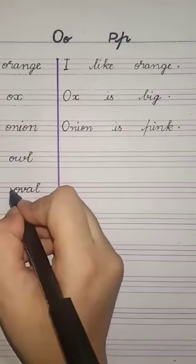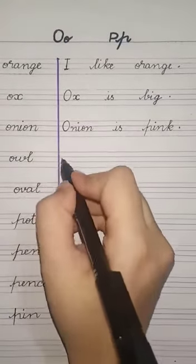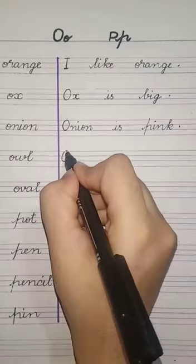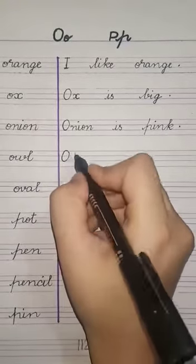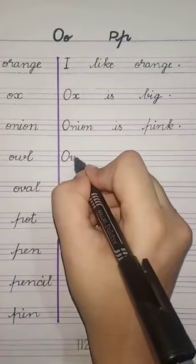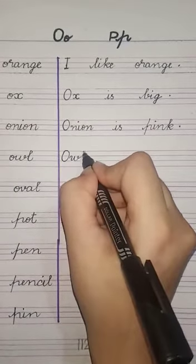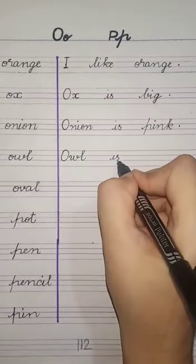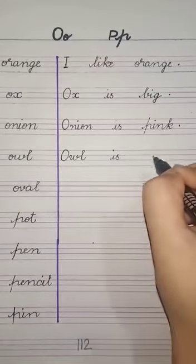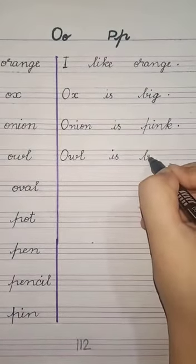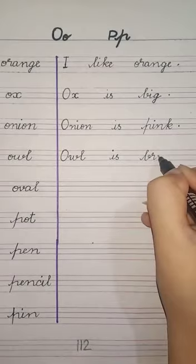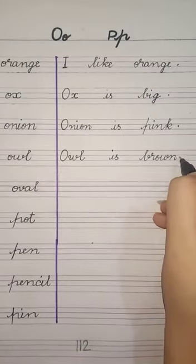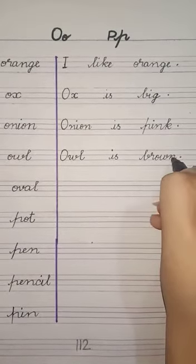Next is Owl. Owl kehet hai ullu ko. Owl is brown. Ullu brown color ka hai. O-W-L, owl. One finger gap, then 'is'. Again finger gap, and write brown: B-R-O-W-N. Brown. And last, full stop.